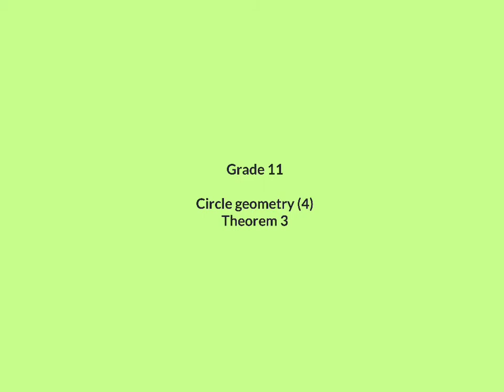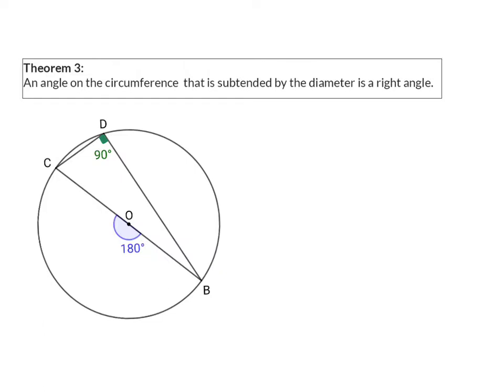In this lesson on circle geometry, we are going to have a look at Theorem 3. An angle on the circumference that is subtended by the diameter is a right angle.